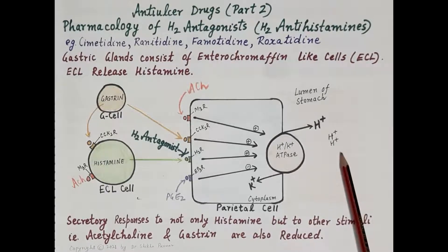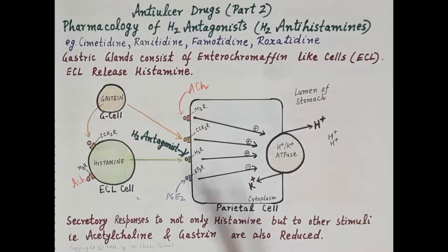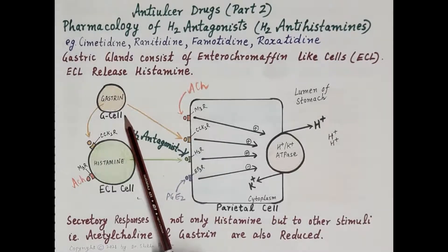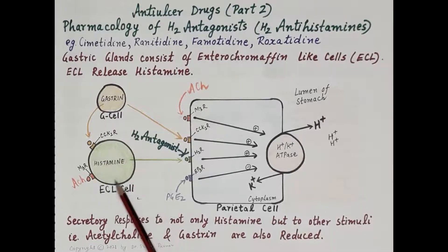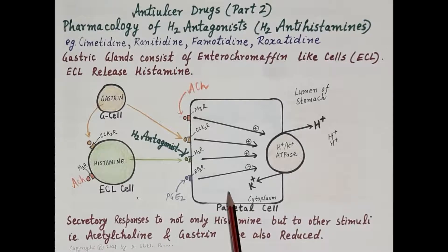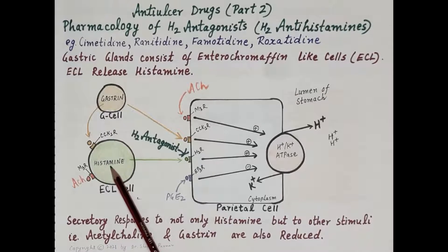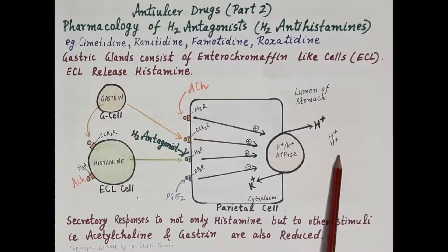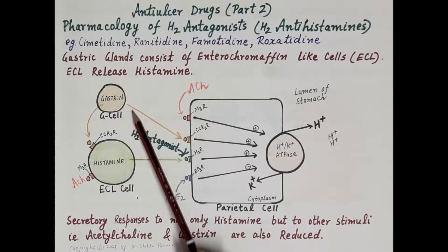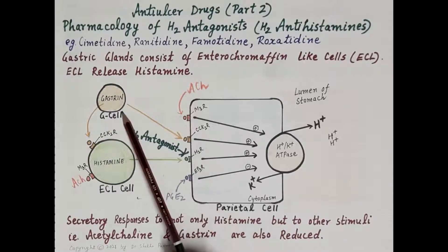Increased secretion of gastric acid by the parietal cell is one of the main causes of peptic ulcer disease. Gastric glands are located in the mucosa. They contain antral G cells that produce gastrin, enterochromaffin-like cells that produce histamine, and parietal cells that produce gastric acid. Acetylcholine, gastrin, and histamine are the three main secretagogues that stimulate parietal cells, with histamine playing the dominant role.